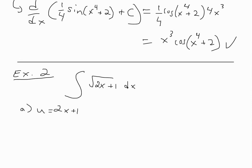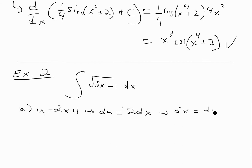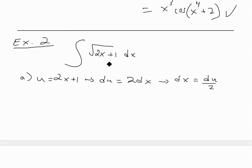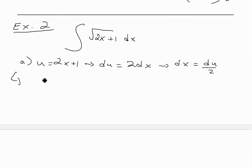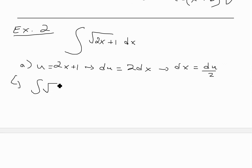For part A with u equals 2x plus 1, we write the differential: du equals 2 dx. We solve for dx: dx equals du over 2. Now we plug everything into the integral, replacing the square root of 2x plus 1 with square root of u, and replacing dx with du over 2.